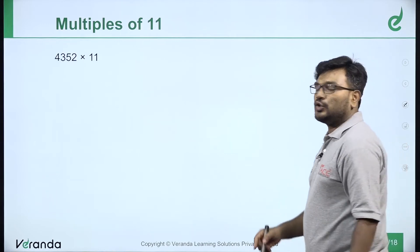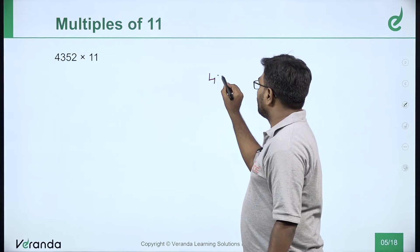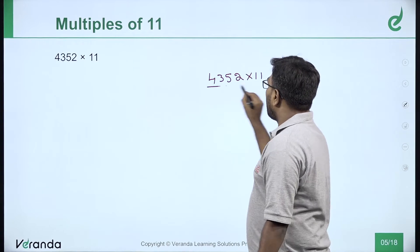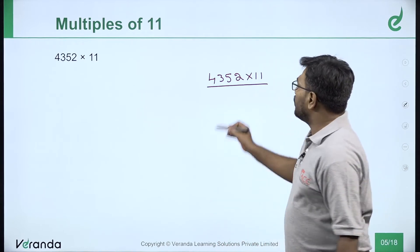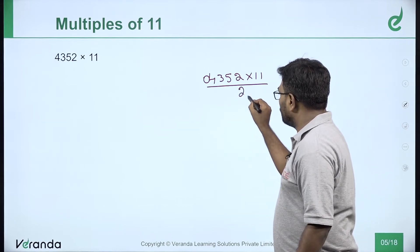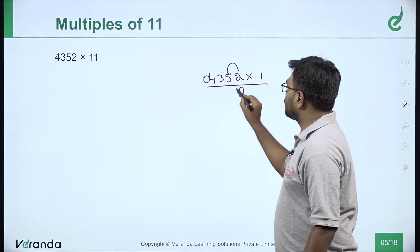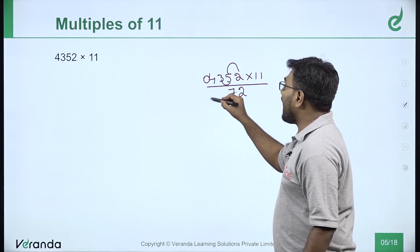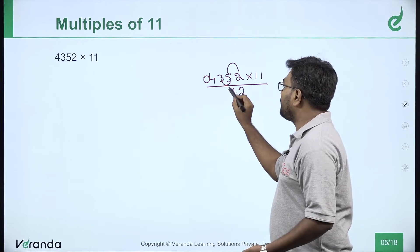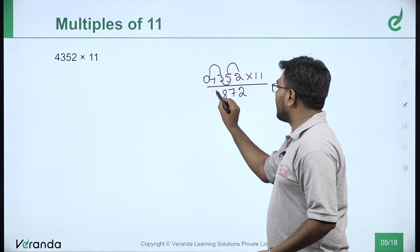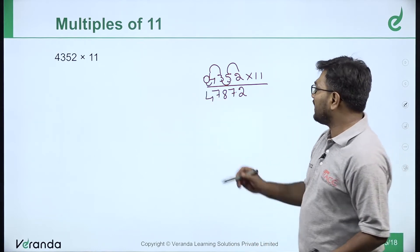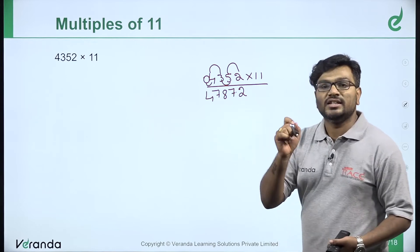Next example: 4352 into 11. Add a 0. First number stays the same. Then 5 plus 2 is 7. Then 3 plus 5 is 8. Then 4 plus 3 is 7. Then 0 plus 4 is 4. Answer: 4352 into 11 is 47872.